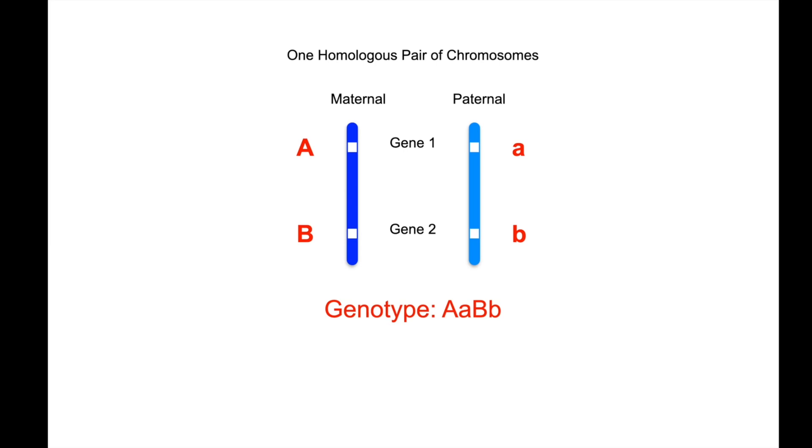You can see at the bottom, the genotype represented by the letters is capital A, lowercase a, capital B, lowercase b, representing gene 1 and gene 2.